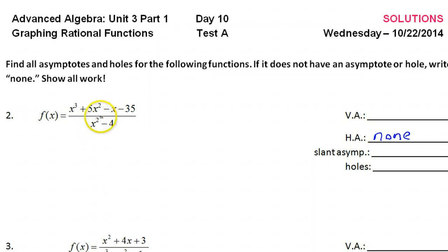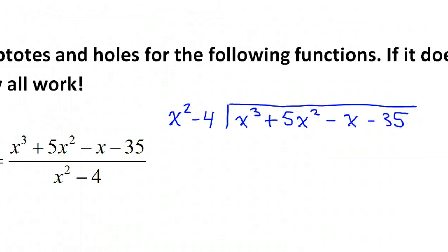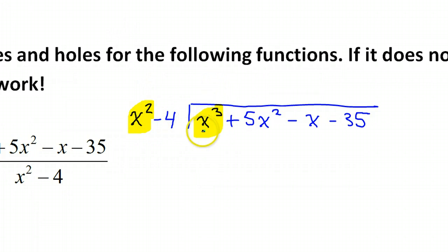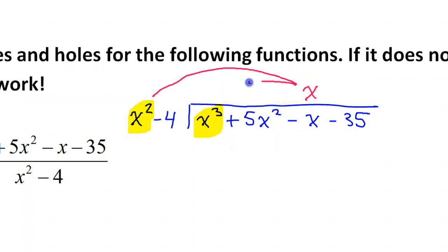To find the slant asymptote, you divide. We have to use long division because it's x squared. If this had just been x minus four, we could have used synthetic division, but we can't. Long division works like this. We focus on the first terms — the x squared and the x to the third power — and we ask ourselves: x squared times what will give me x to the third power? Well, that's x. And you should line up your like terms. Once you have that, you do the distributive property with it.